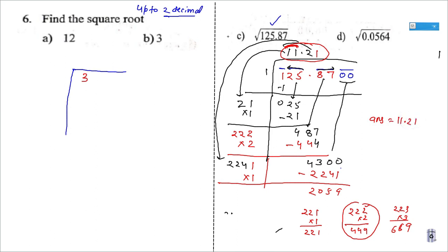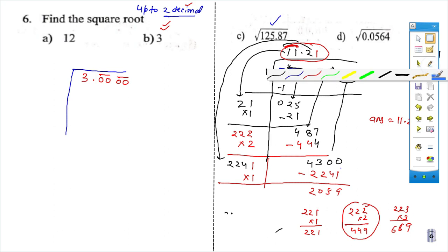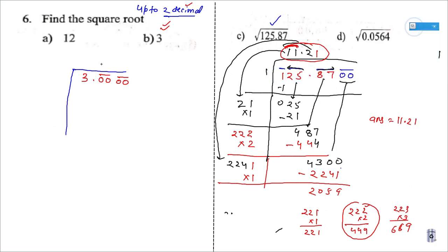Now the question I ask in the half-yearly exam: what is the Square Root of 3? We know this is not a perfect square. First step: after the decimal, I can put as many zeros as needed. I need 2 decimal places, so I put 2 pairs of zeros. Now, tell me a number whose square is 3 or less than 3. The answer is 1. So 1 squared is 1. Subtract: 3 minus 1 = 2. The complete next pair (00) comes down, making 200. Double of 1 is 2.